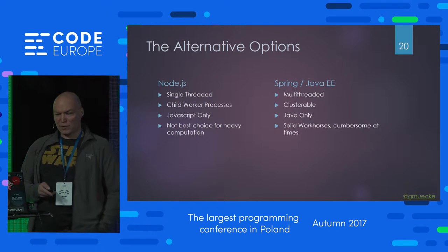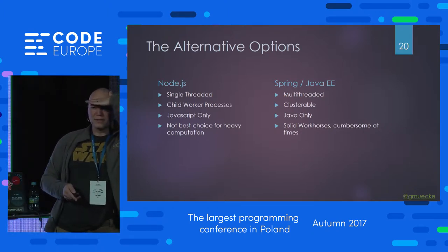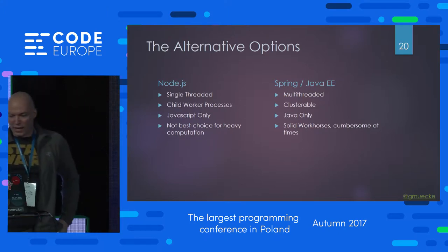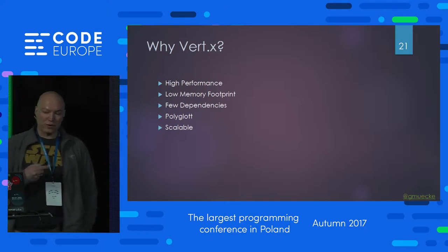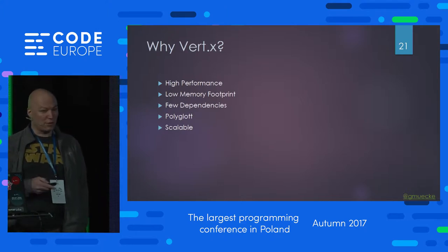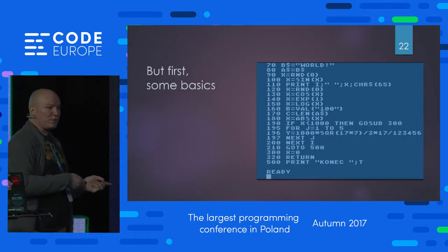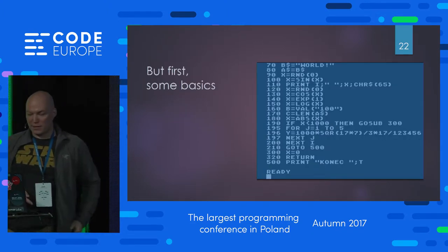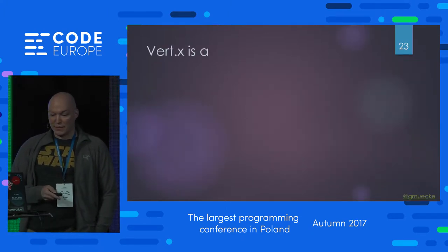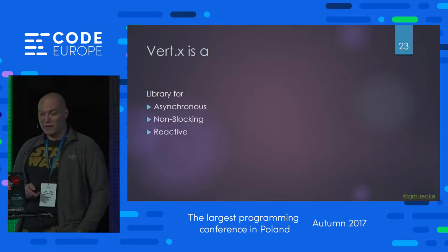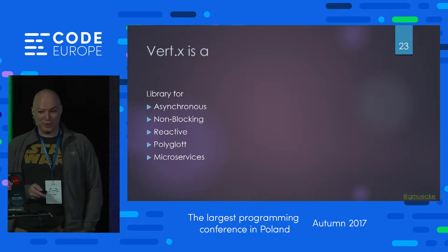So I had to look into Vert.x. I'd heard about this framework before. Vert.x is high performance, has a low memory footprint, requires only a few dependencies, is polyglot and scalable. Before diving into how I implemented this with Vert.x, some basics: Vert.x is a library for asynchronous, non-blocking, reactive, polyglot microservices. If you ever played buzzword bingo, you've won now.